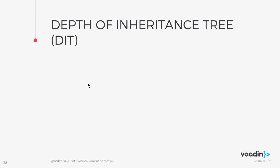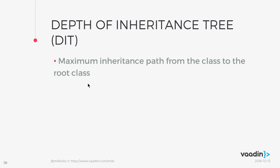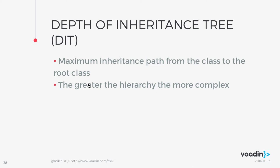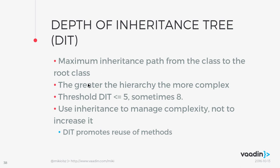The second metric is Depth of Inheritance Tree (DIT). It measures how deep the inheritance hierarchy goes from the root class. The greater the hierarchy, the more complex the system. The threshold is five, or sometimes eight for very large projects. Proper use of inheritance allows you to structure your code and manage complexity without increasing it, and this metric promotes the reuse of methods.